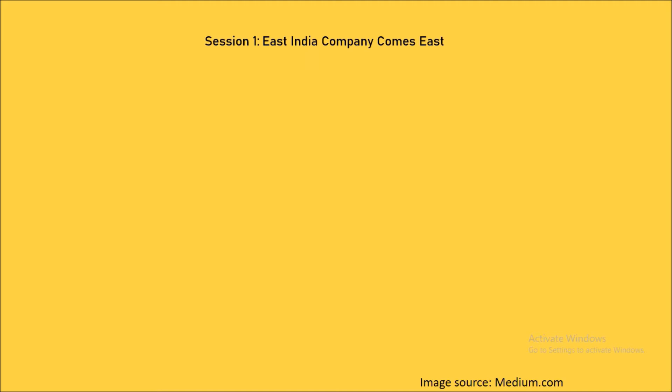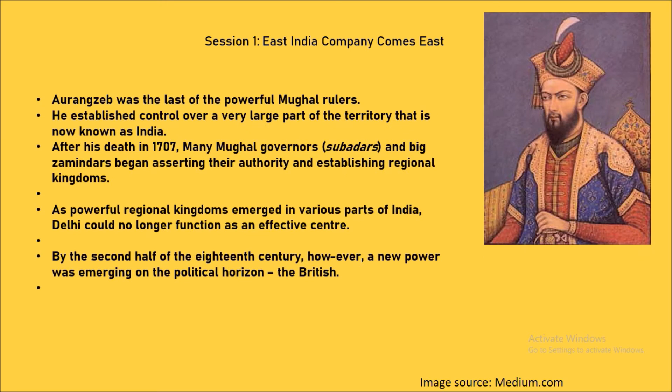Let us now move to Session One: East India Company coming to the East — the company establishing its power from trade to territory. Aurangzeb was the last of the powerful Mughal rulers who ruled India. He was one of the most efficient and controversial rulers of his time, who established control over a very large part of the territory that is now known as India.